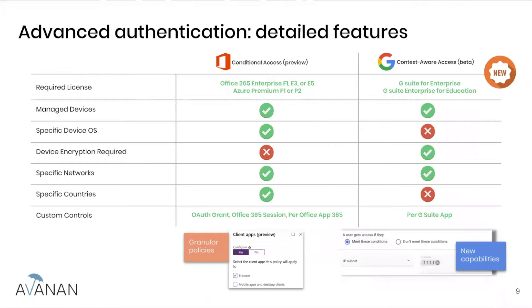For example, Google will allow you to create conditions relevant to a specific application — so you can use Google Drive only if you come from a specific VPN network. As opposed to Microsoft, which allows you to get more granular: you can log in to Office 365 from anywhere in the United States, but only authorize a third-party application from the VPN network. Those types of controls really make the difference. Overall, I do expect Google to come out with a whole lot of new capabilities and configurations that will make it a truly competitive solution.